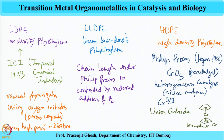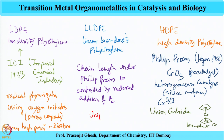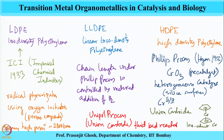Under the Phillips process, chain length is controlled by metered addition of hydrogen, which gives rise to a lower density polymer — this is how LLDPE is produced. There was also a significant discovery in the form of the Unipol process from Union Carbide, which uses a fluid bed reactor and has been used for producing both LLDPE and HDPE.